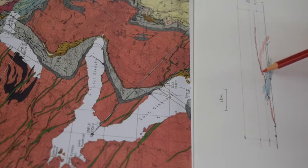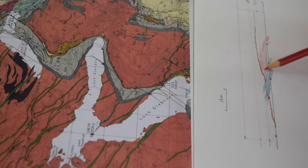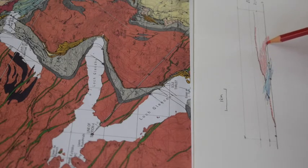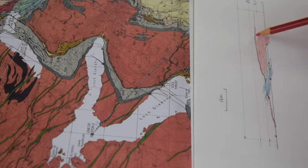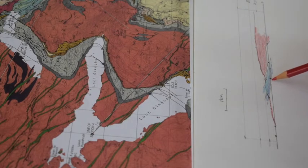So this is the Glencool thrust sheet. Something like this. An exciting watch, me colouring in a cross section. Let's add the Lewisian of the footwall now, so we see what we've got.